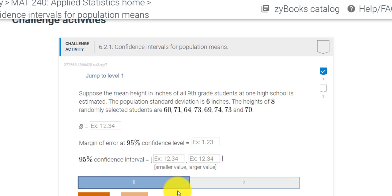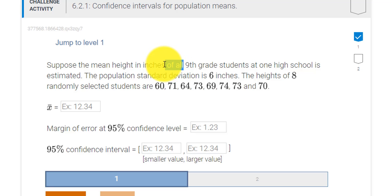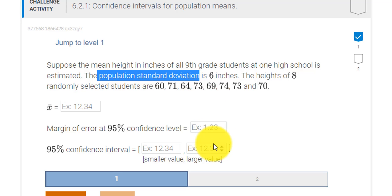Let's take a look at problem 6.2.1. It looks like we have the mean height of all ninth graders. So the word 'all' to me indicates it's a population mean, and then we have a population standard deviation. So we're going to use the Z test instead of the T test. We use Z when we have a population standard deviation that's known.